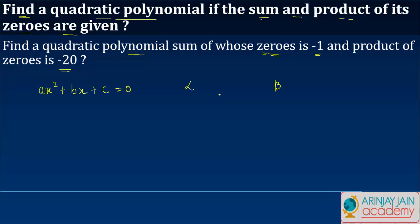In this case you are told that the sum of the zeros is minus 1, which means that alpha plus beta is equal to minus 1, and the product of the zeros alpha beta is equal to minus 20.